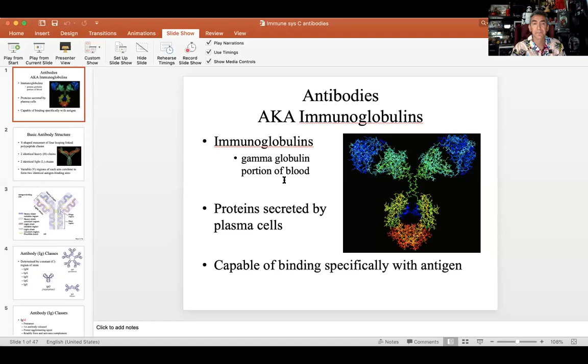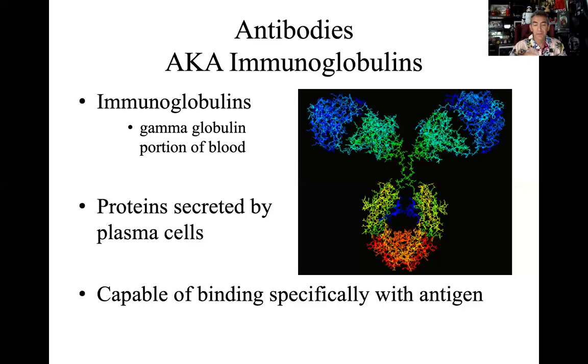Hello everyone, welcome to the Biology 2402 course and the YouTube world. We're here to continue lecturing on the immune system. Up to this point, you should already be familiar with the two main divisions of the immune system: the innate system and the adaptive system. We've looked at innate aspects like complement and NK cells, and adaptive elements like B cells and T cells.